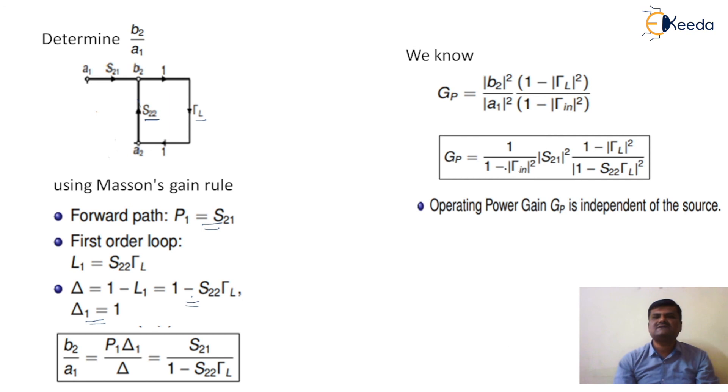If you see it carefully, then operating power gain Gp is independent of the source. So this is the operating power gain of an amplifier. Thank you.